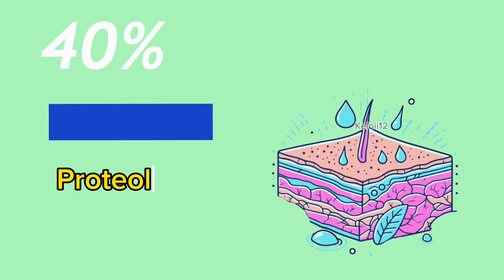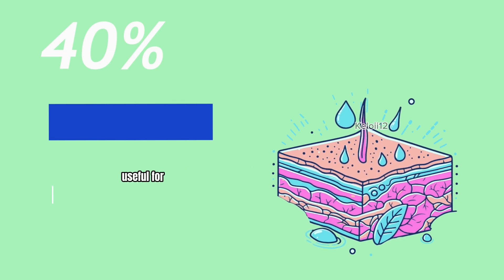40% can be proteolytic, breaking down proteins, useful for dissolving dystrophic nails.